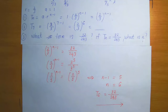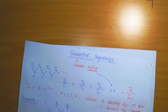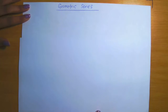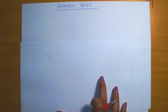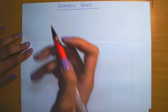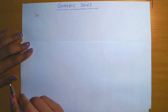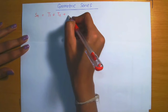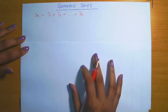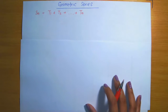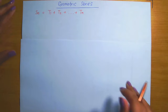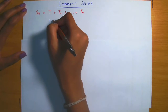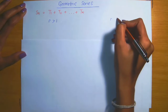Now let's look into geometric series. Recall that a series is the sum of the terms in a sequence. Sn denotes the sum to n terms, meaning T1 plus T2 added up to and including term Tn. In the case of geometric sequences, the sum to n terms can be determined by a formula, which is divided into two cases. The first case is when r is greater than 1, and the second case is when r is less than 1.